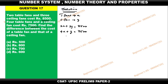We just need to identify the difference between them, which means y minus x or x minus y. This question can be solved in two different ways: finding the value of x and y and then finding the difference — that is Method 1 — or directly finding the difference between y and x.